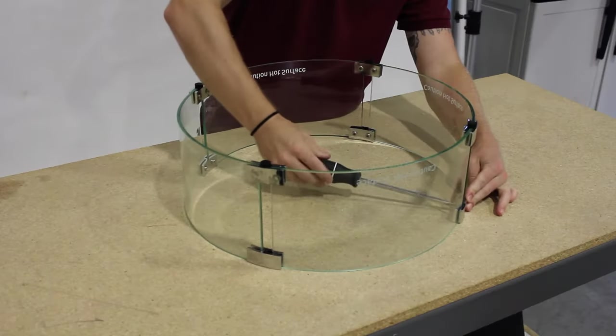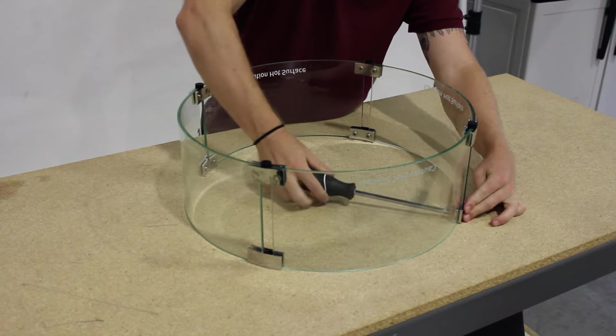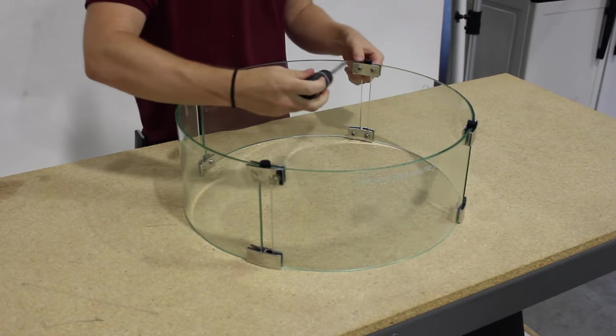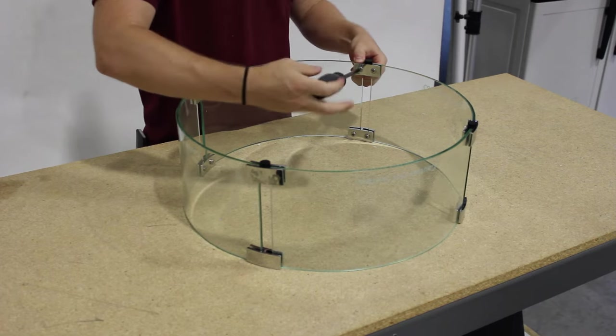Once you have all connectors in place, you can now go to each top and bottom connector and tighten all of the screws. You want to make these as tight as you can with your screwdriver.